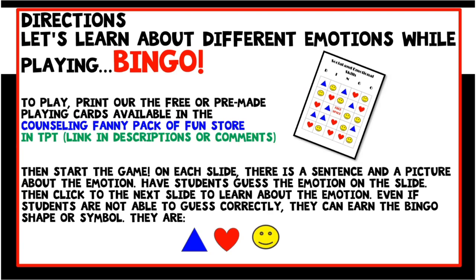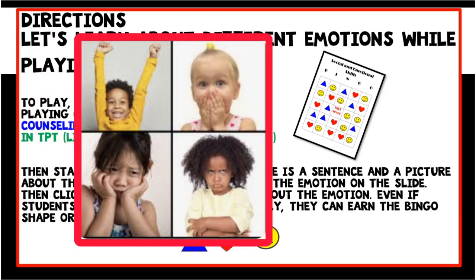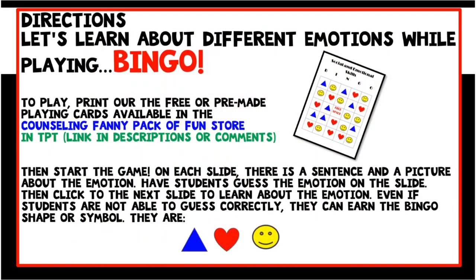On each slide, there is a sentence and picture about the situation or emotion. Have students guess the emotion on the slide. Then click to the next slide to learn about the emotion. Even if students are not able to guess correctly, they can earn a bingo shape or symbol.